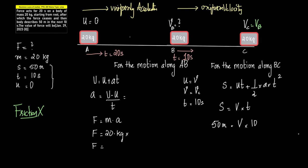So the first part is only for 20 seconds. For the motion along AB, u is equal to zero, velocity at B is vb, which is something we don't know.